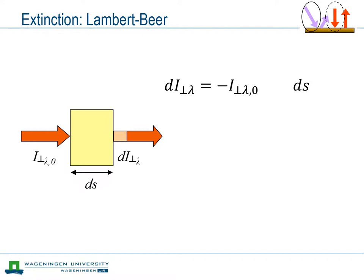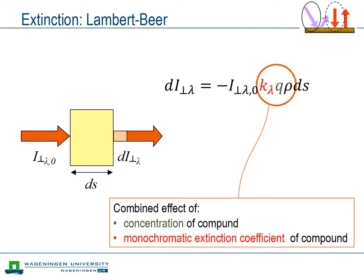Furthermore, the length of the slice of air, ds, plays a role. But besides, we also need to consider the concentration or density of the compound that is optically active. The product of its specific concentration and air density. Furthermore, the actual extinction depends on the optical properties of the compound under consideration, for the wavelength that we consider. That is, the monochromatic extinction coefficient.